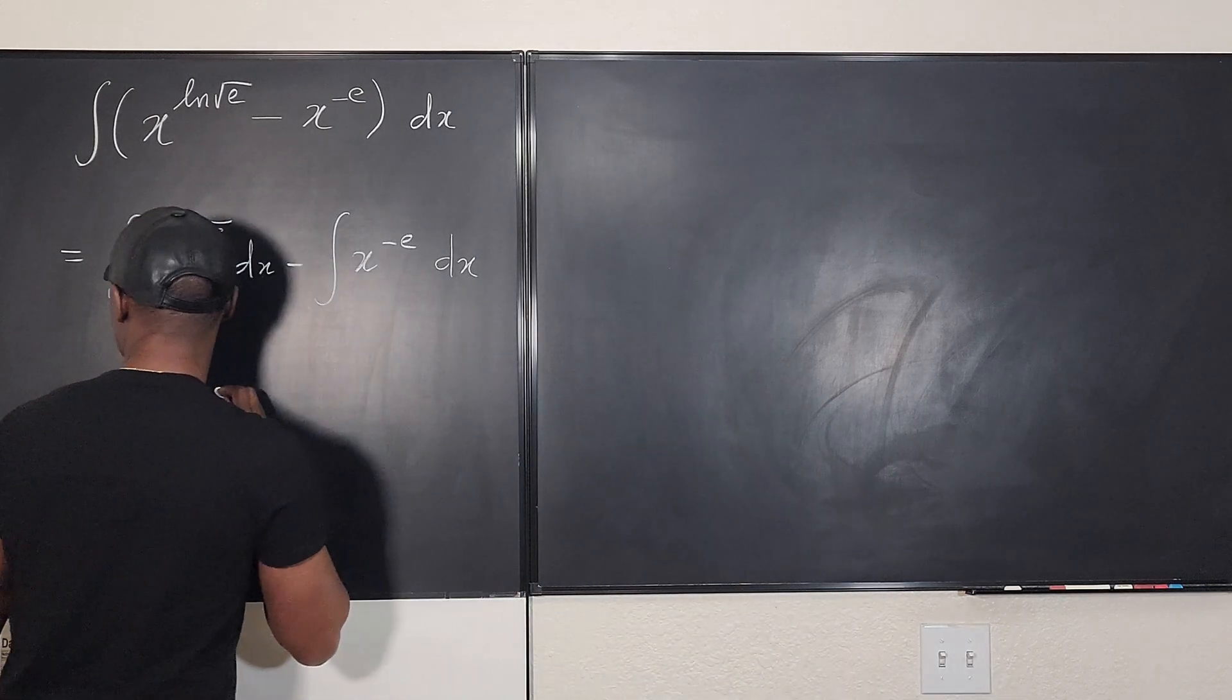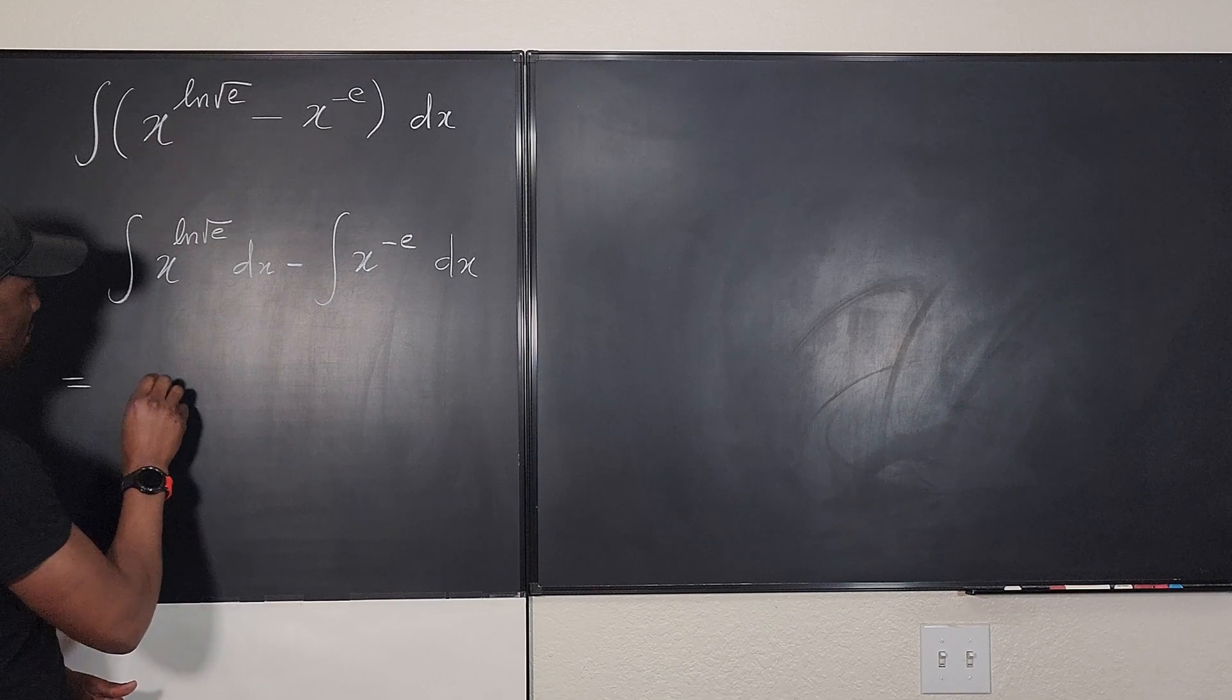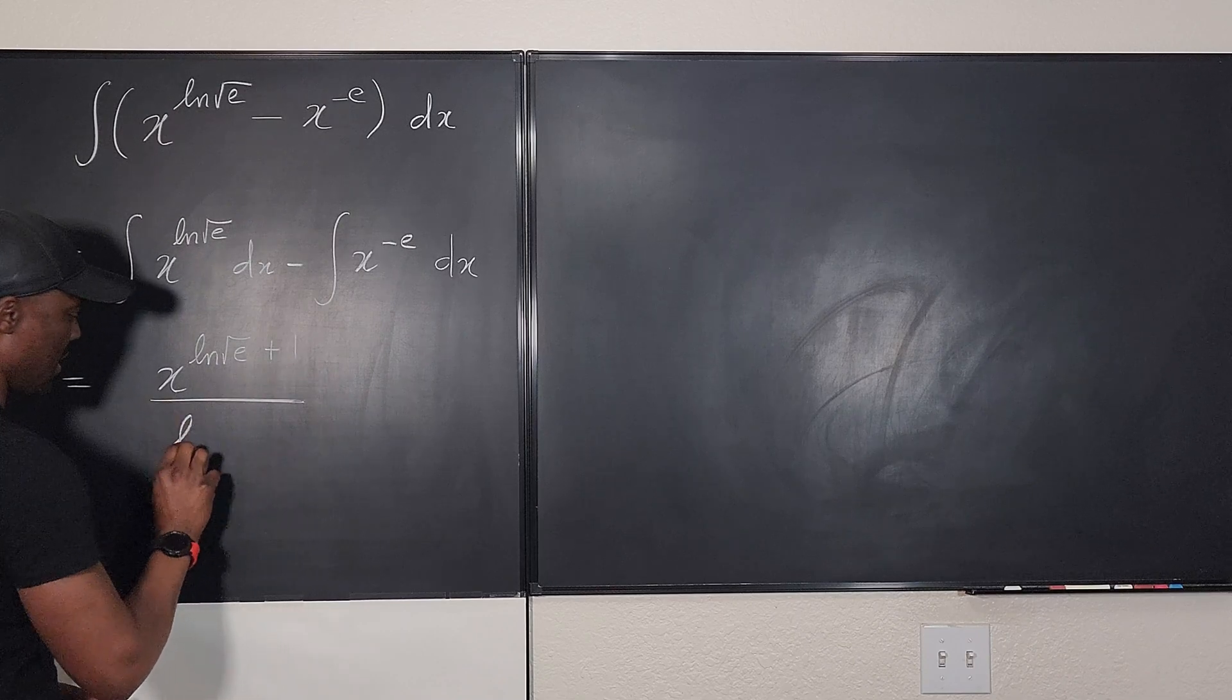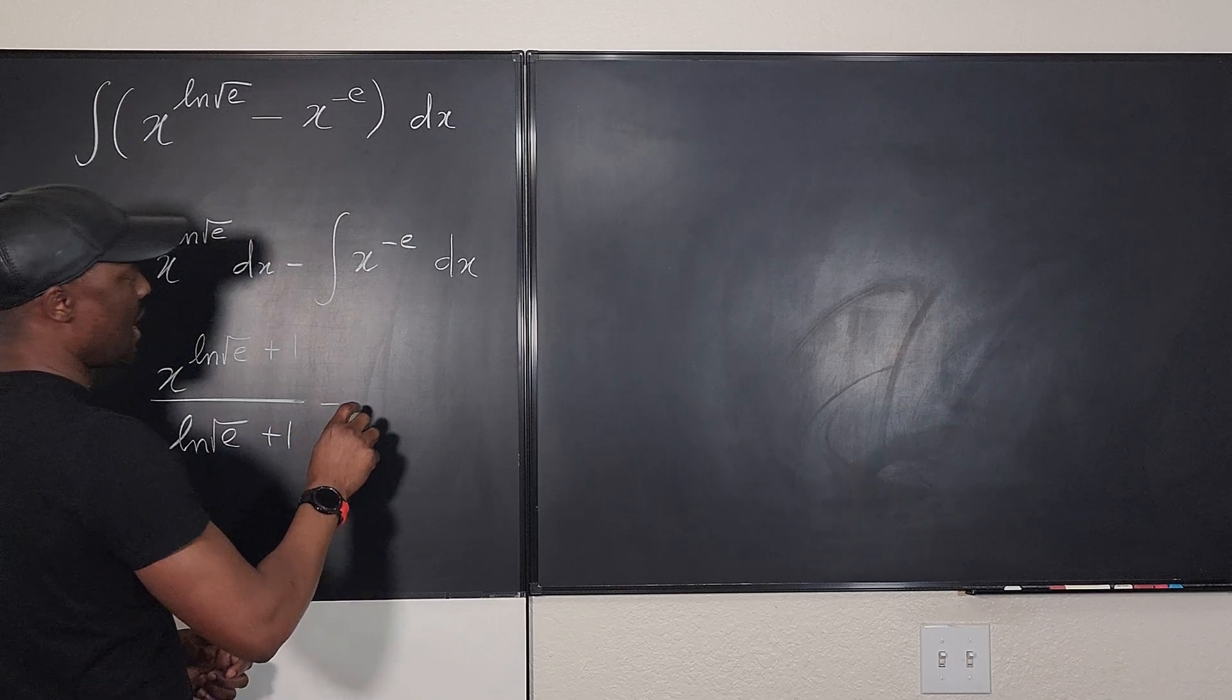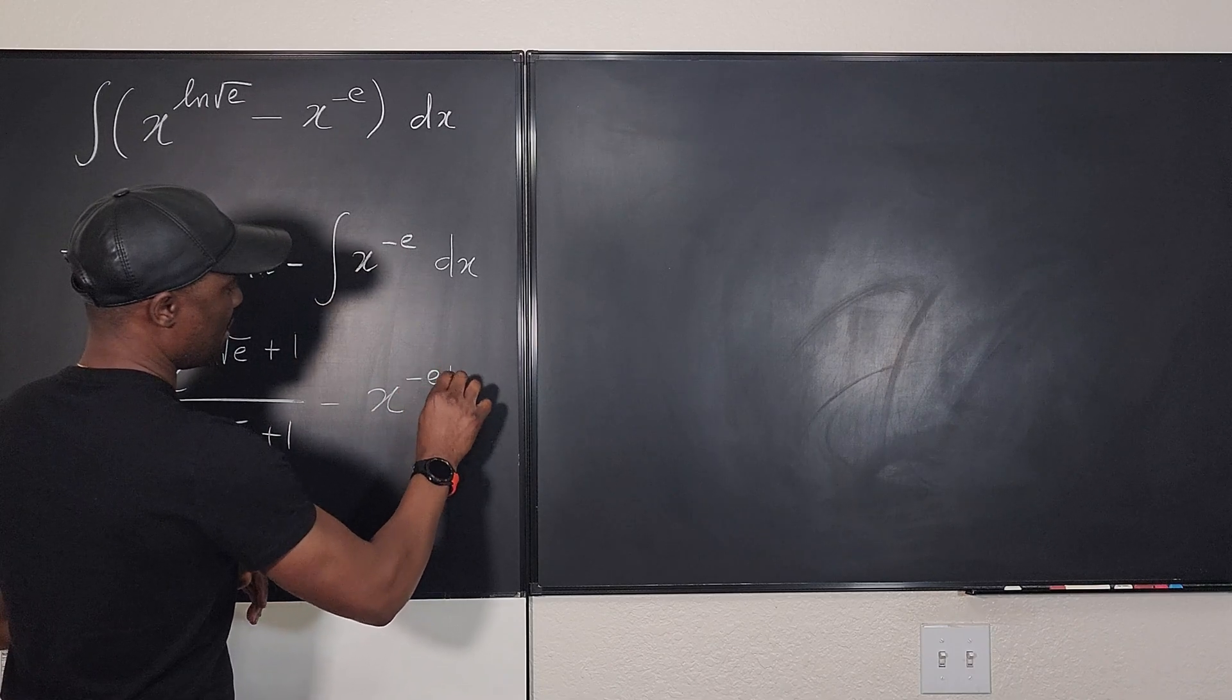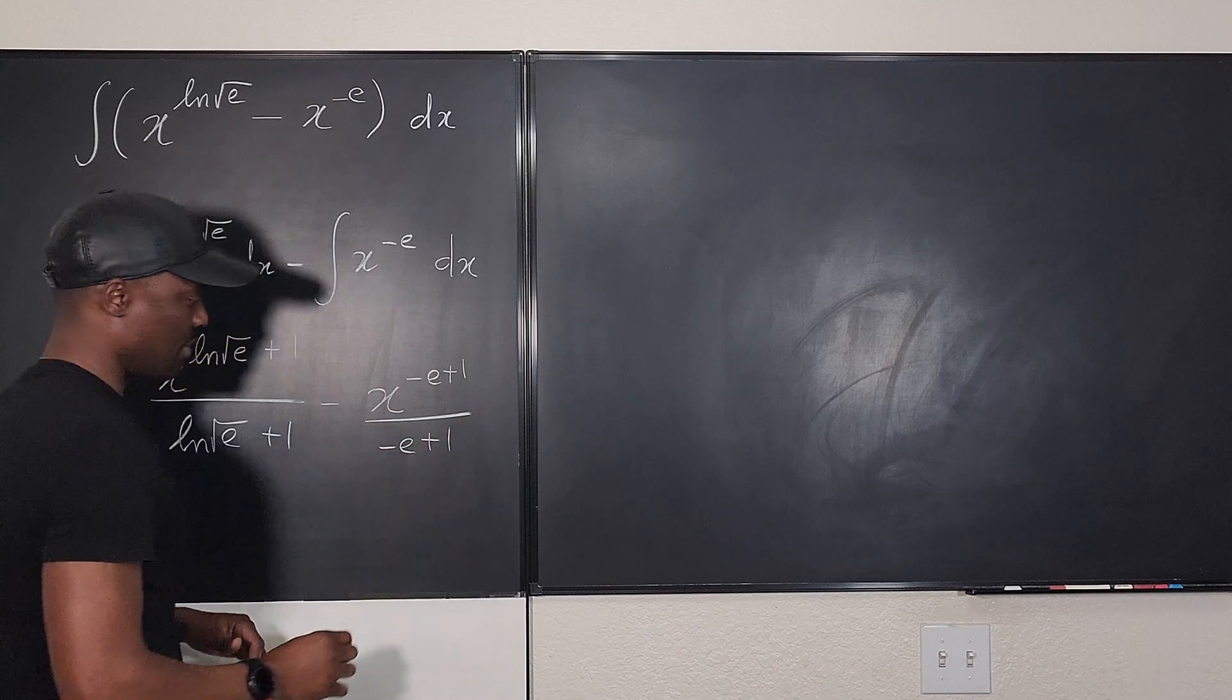So what I'm going to do is say this is equal to, apply the power rule. It's going to be X to the natural log of square root of E plus one over the natural log of square root of E plus one. And then this would be minus here. It's going to be X to the negative E plus one over negative E plus one.